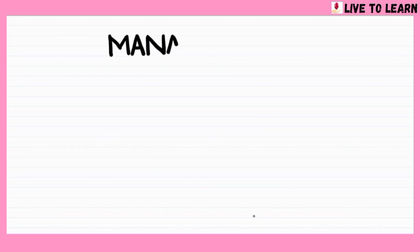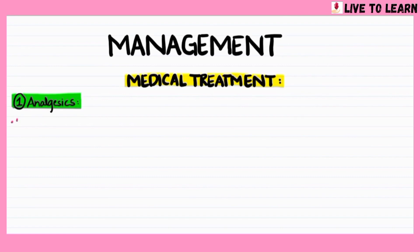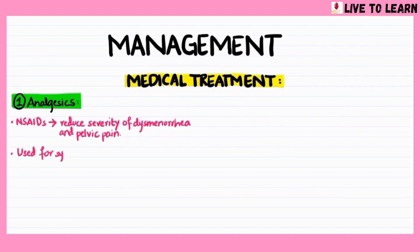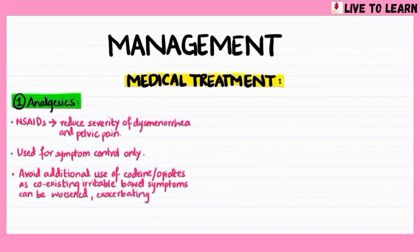Endometriosis can be managed with medical and surgical treatment depending on the patient's age, symptoms, extent of disease, and her desire to have children. Non-steroidal anti-inflammatory drugs reduce the severity of dysmenorrhea and pelvic pain; however, their use is for symptom control only. It is advised to avoid additional use of codeine or opiates, as coexisting irritable bowel symptoms can be worsened, which eventually exacerbates the pelvic pain.